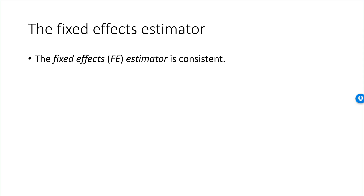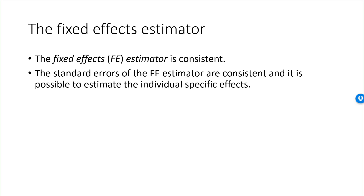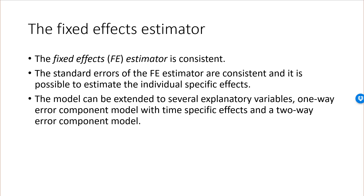This estimator will be consistent and the standard errors will be consistent. We also obtain estimates of the individual specific effects. Although we have only considered one explanatory variable with individual specific effects, this easily extends to several explanatory variables and other versions of the error component model. Estimating a model using the fixed effect estimator is straightforward; you can also see how to do the fixed effect estimator in EViews and Gretl in the lecture on the random effects estimator.